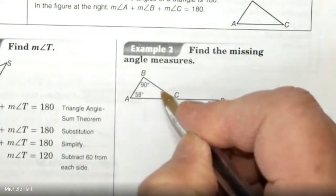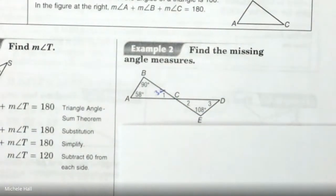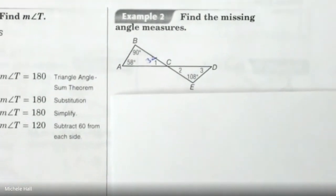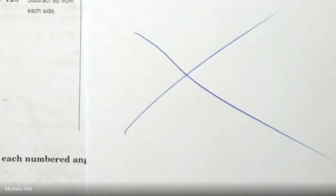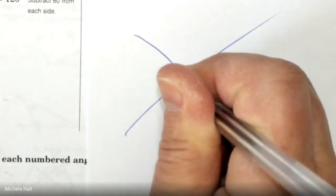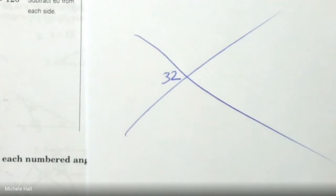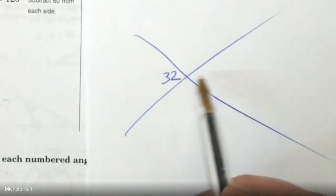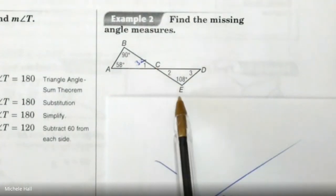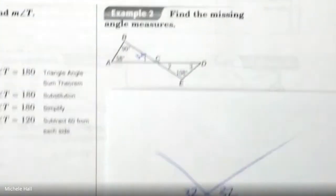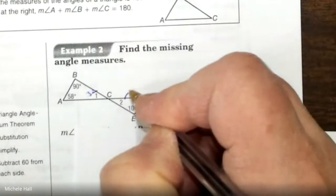We know this angle is 32. When I look at the second triangle, how am I going to figure that out? This is just like algebra — it's based on previous information. They have two intersecting lines. I know that angle 1 is 32. Vertical angles are congruent, so angle 2 is also 32 because those are intersecting lines.